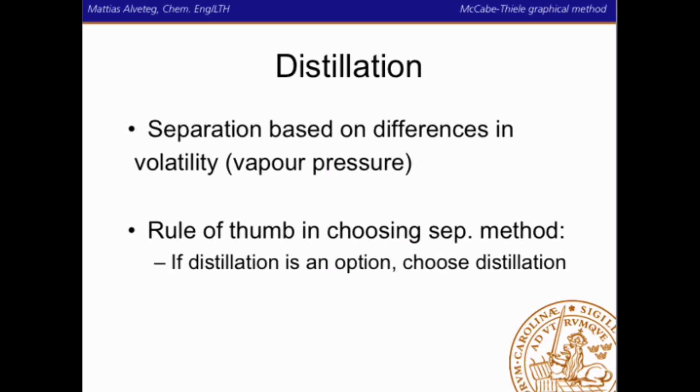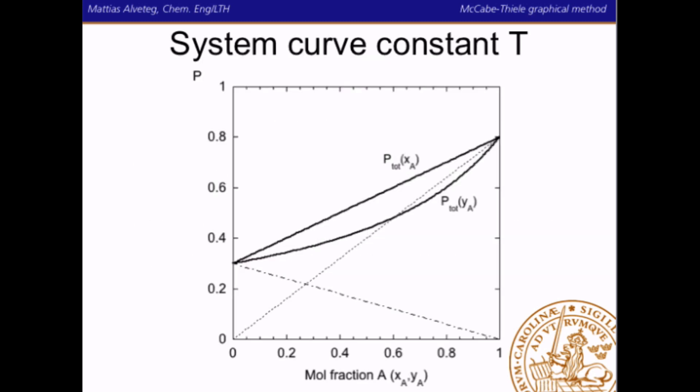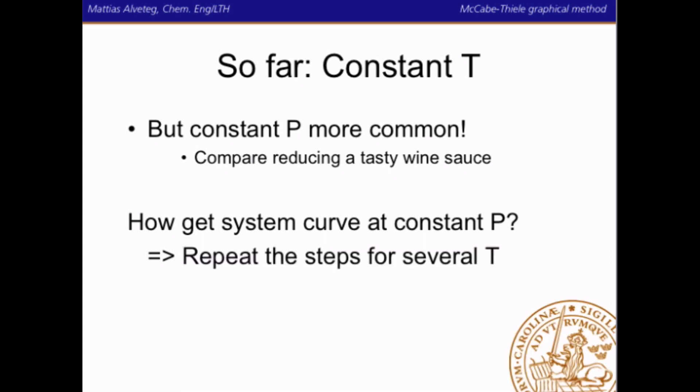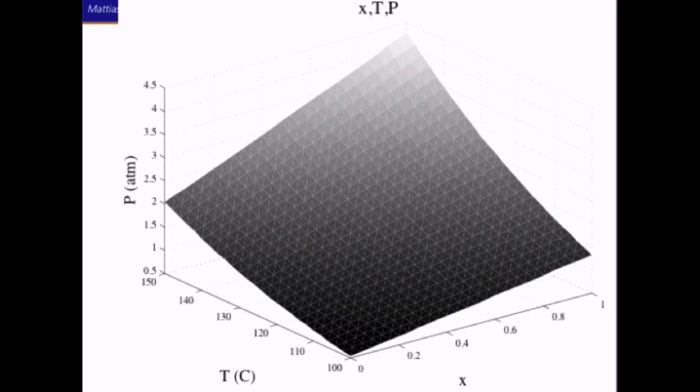Energy is an issue in distillation, and we will come back to that after Christmas when dealing with heat transfer and heat exchangers. We have previously seen how you can create a system curve for constant temperature, but that is not so convenient when dealing with distillation — it's far more convenient to deal with constant pressure. For example, when you reduce a tasty wine sauce in your kitchen, you don't have constant temperature; you rather have constant air pressure. To get the system curve at constant pressure, you simply repeat the steps for constant temperature and then use that data to re-cut your information to get constant pressure instead.